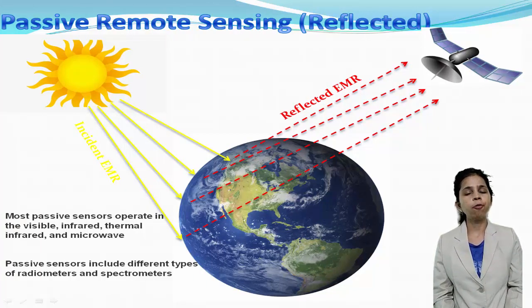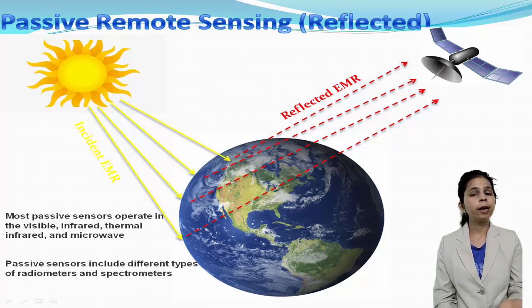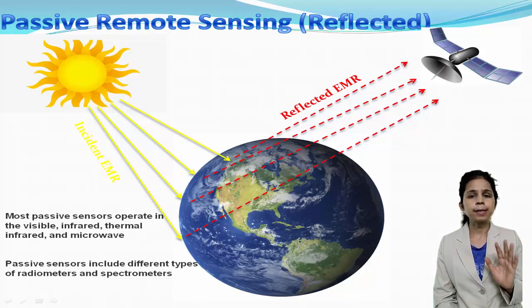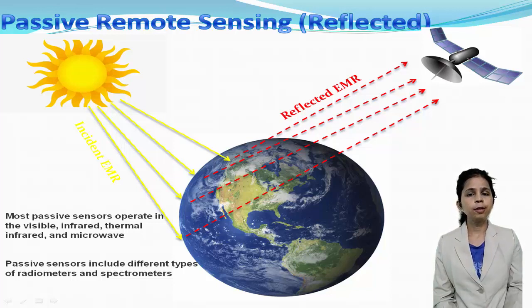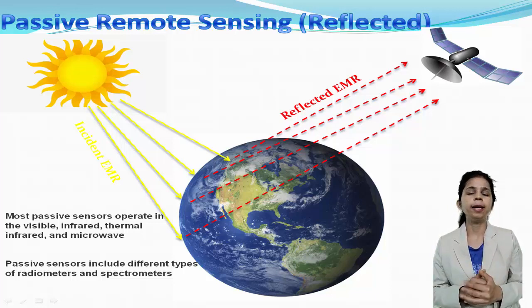The spectroradiometer can give you information about land and sea temperature, color of the ocean, vegetation properties, cloud and aerosol properties, what chemical compounds are present in the environment, and many other physical parameters. However, passive remote sensing has one limitation: the sensors cannot penetrate dense cloud cover. So it is not very useful for studying tropical regions which are always covered by dense clouds.